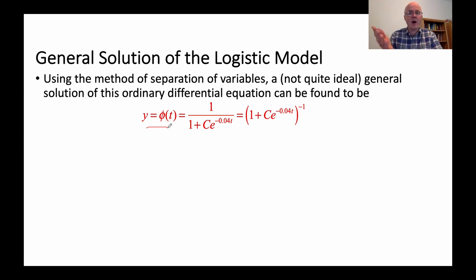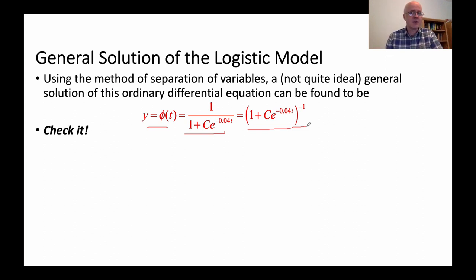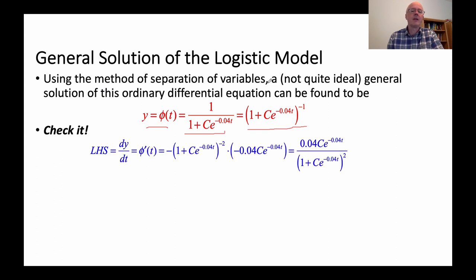The general solution, found by separation of variables, is phi(t) = 1/(1 + ce^{-0.04t}), which can also be written as (1 + ce^{-0.04t})^{-1}. We should check this solution by plugging into both the left-hand side and right-hand side of the differential equation and simplifying to see if we get the same function of t.